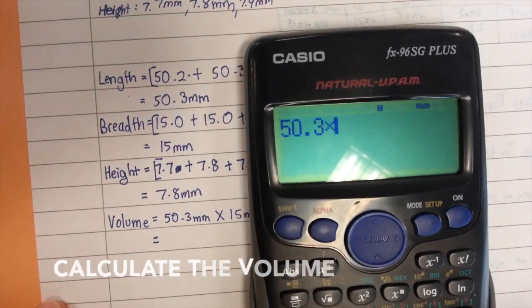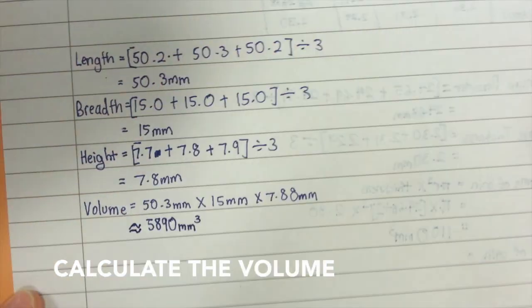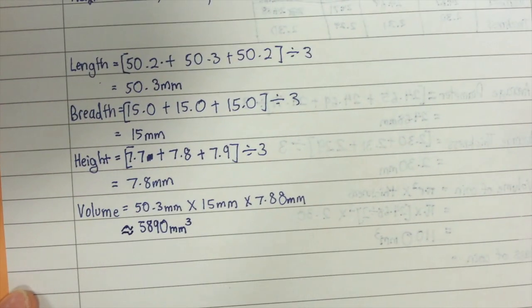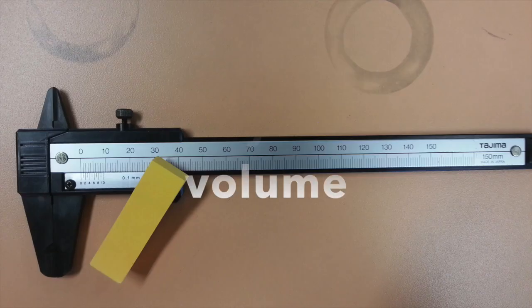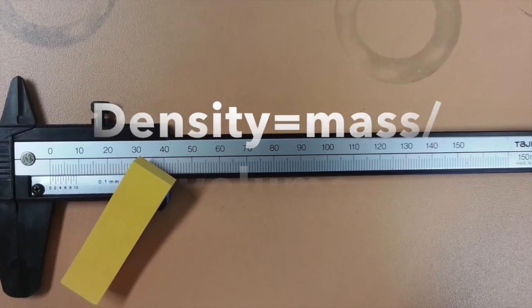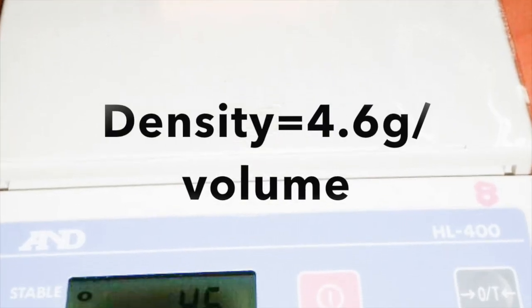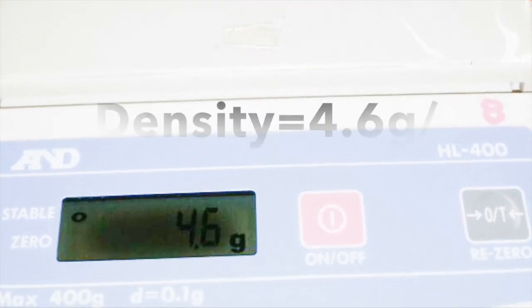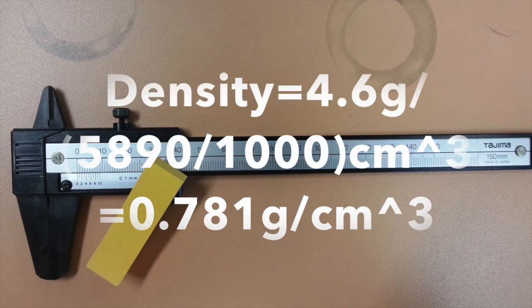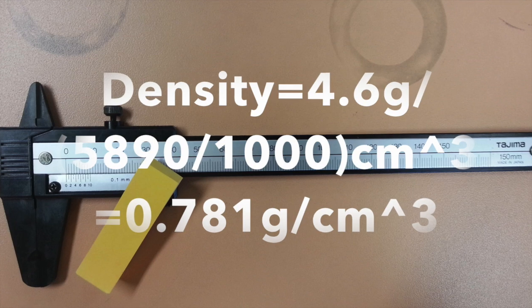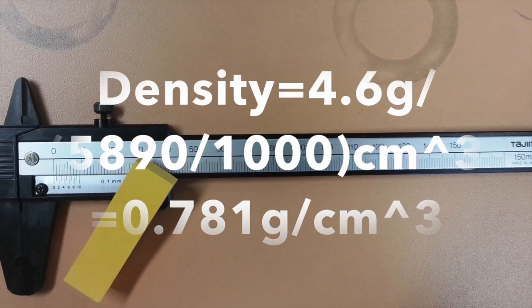And finally, the volume of the notepad is as follows. We will then find the density of the notepad by taking its mass divided by its volume. The density of the notepad is 0.781 g per cm³.